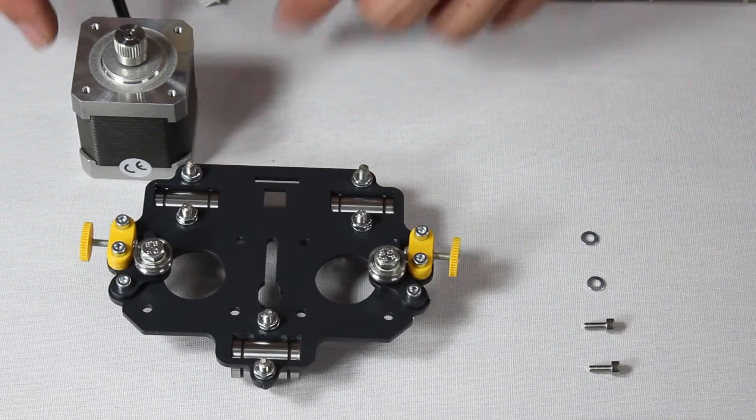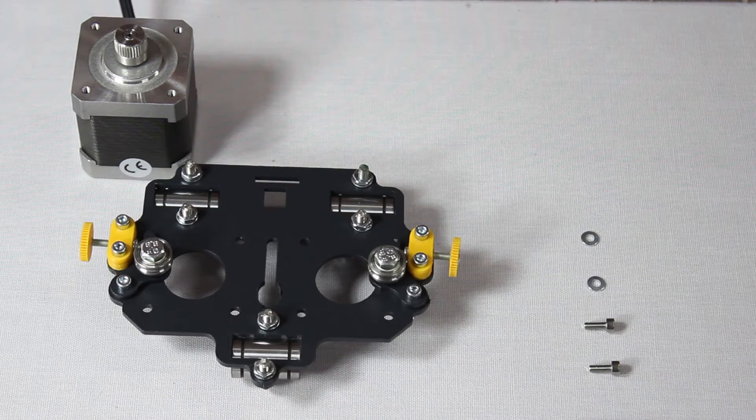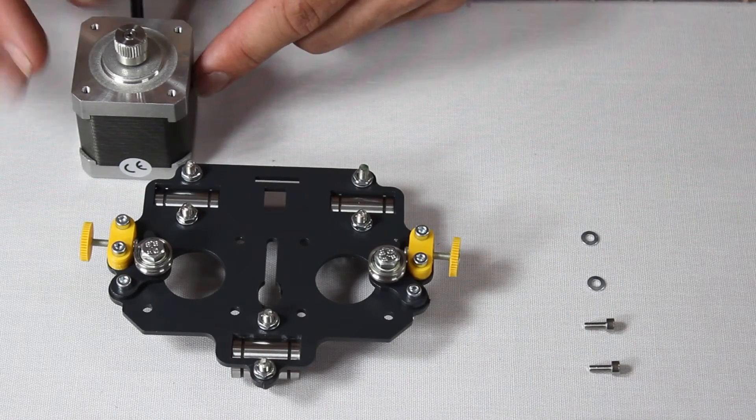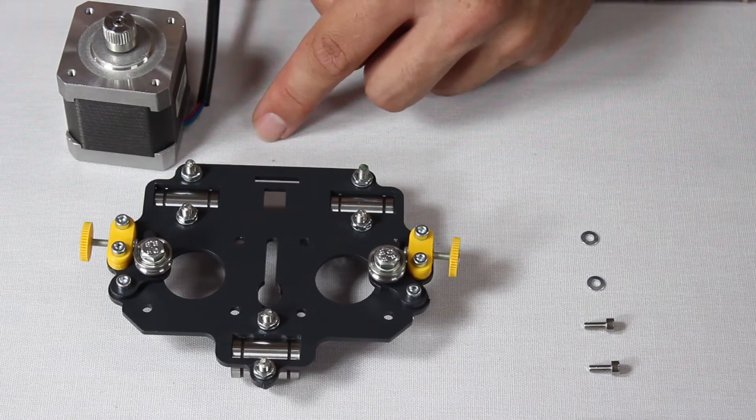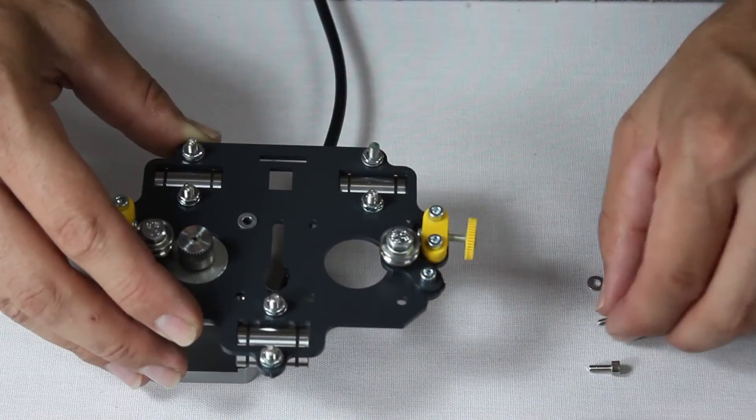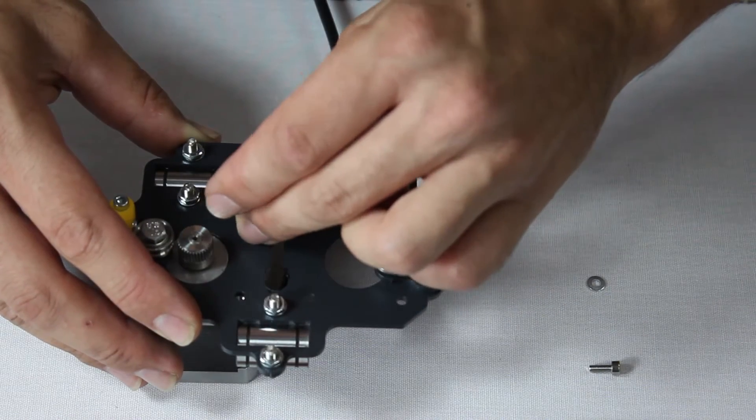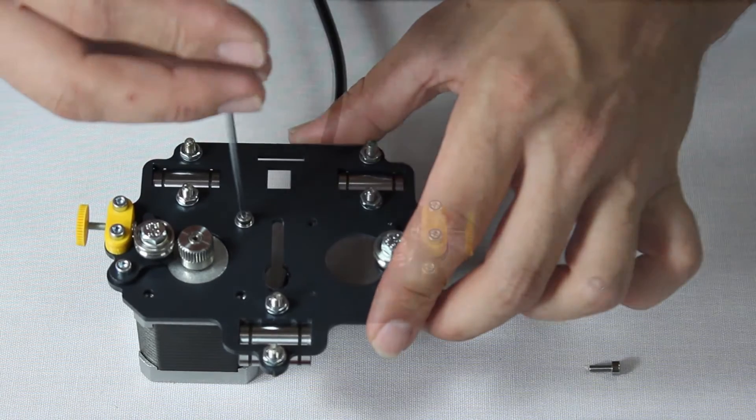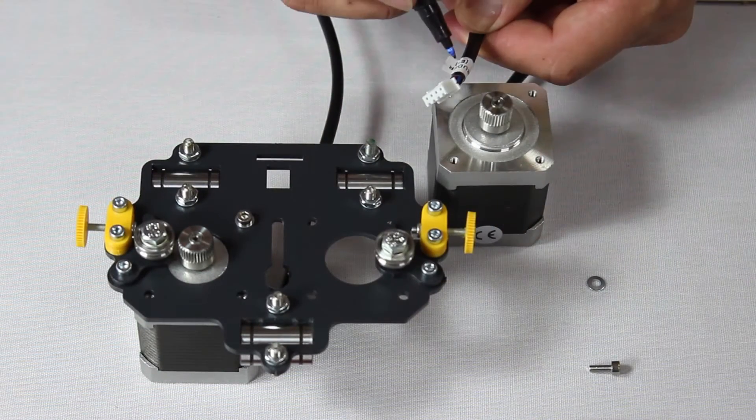Mounting the motors is pretty straightforward, but there are some details you have to pay attention to. Make sure the cable coming out of each motor is facing inwards, and be certain that you place the 0 motor and the 1 motor in the correct order, which is as you see here.